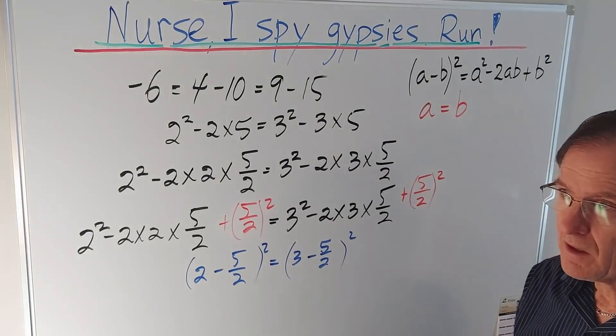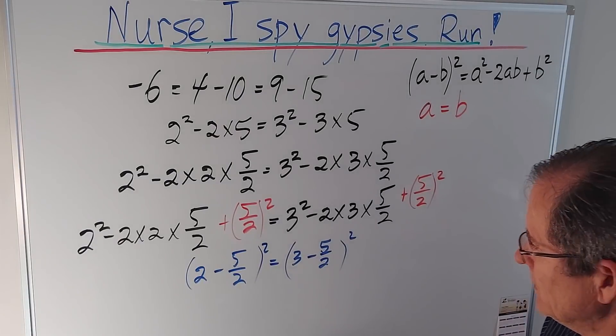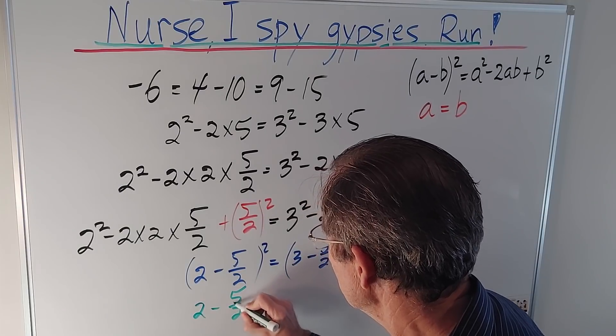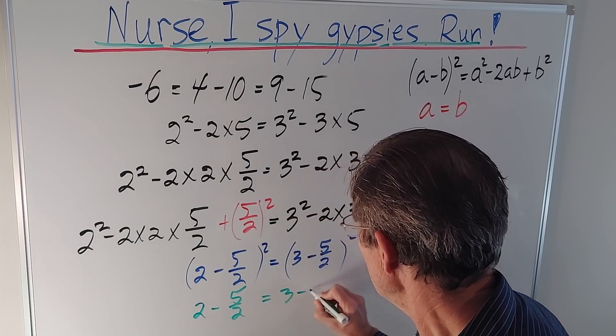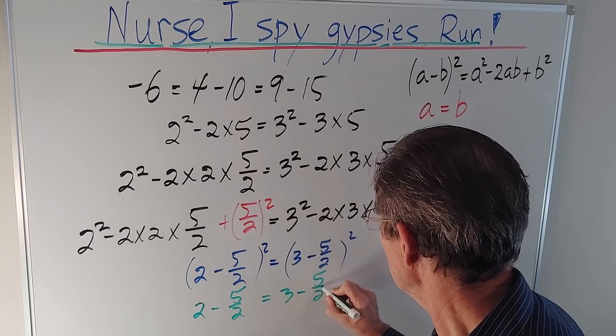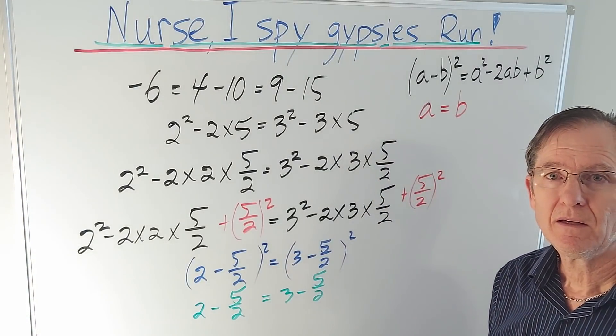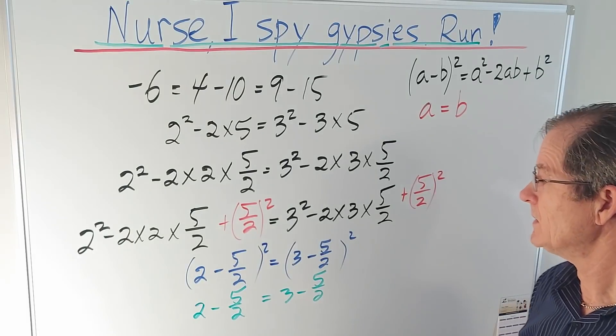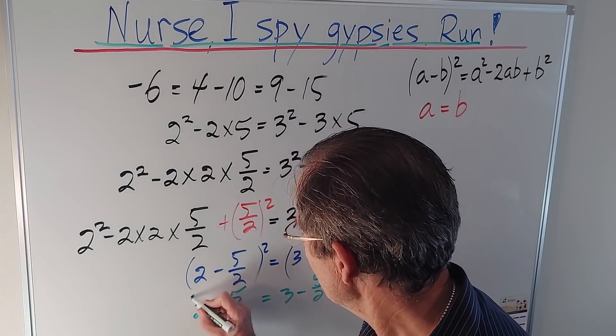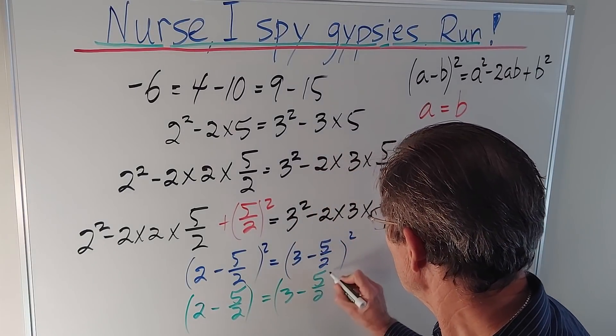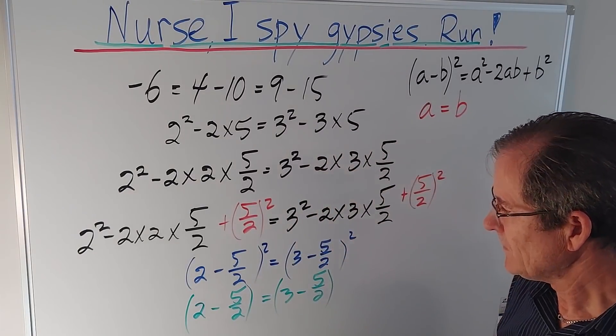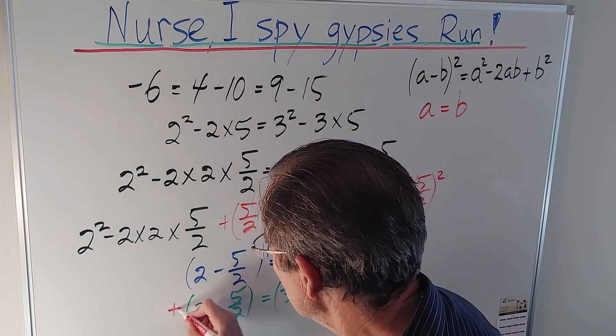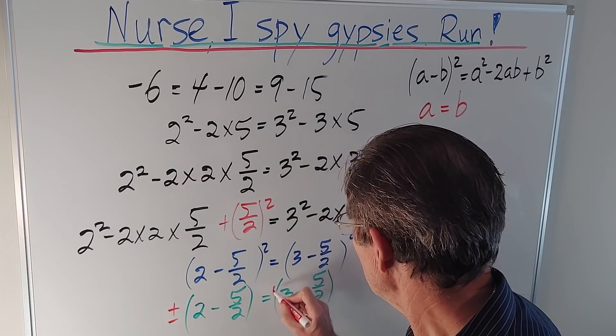Where do I go from here? Well I take the square root of both sides. If I take the square root of both sides, I get 2 minus 5 halves equals 3 minus 5 halves. Right? Wrong. What's wrong with that? Oh, you got to do plus or minus. Okay, let's do plus or minus. You're right. Whenever you take the square root of something, you got to do plus or minus. So I get plus or minus equals plus or minus.